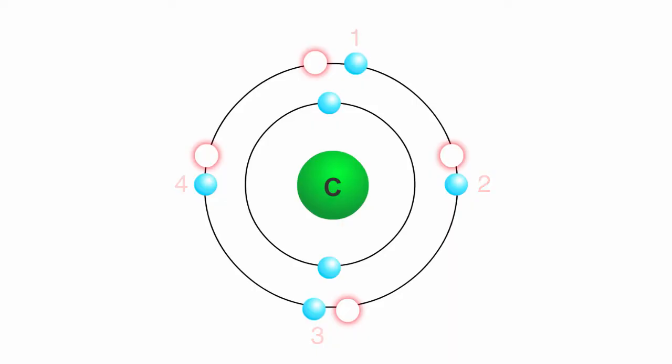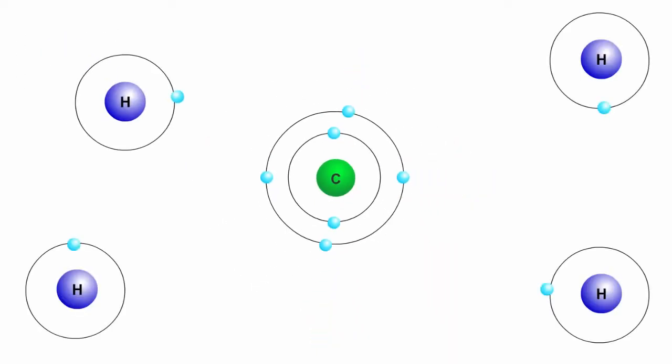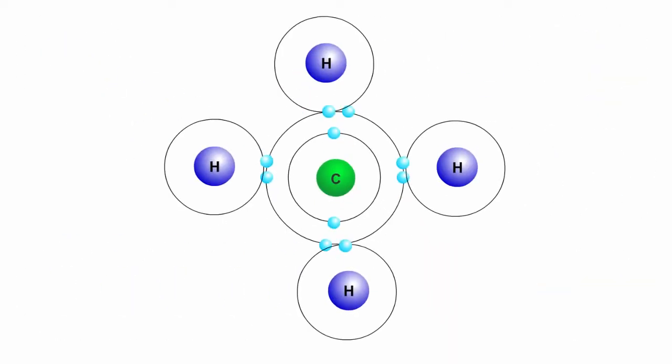If one carbon and four hydrogen atoms come together and share their electrons, carbon achieves an octet of electrons. Note that each hydrogen in this compound achieves two electrons in its outer shell. This is the stable configuration of the first electron shell.